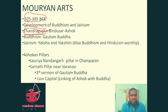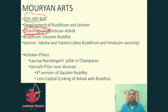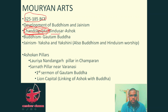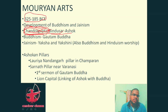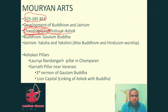The Mauryan Empire was created by Chandragupta Maurya, guided by Chanakya — the great economist who wrote the Arthashastra, which covers theories on governance and economics. Chandragupta's son was Bindusara and Bindusara's son was Ashoka. The greatest arts were developed during the times of Chandragupta, Bindusara, and Ashoka.